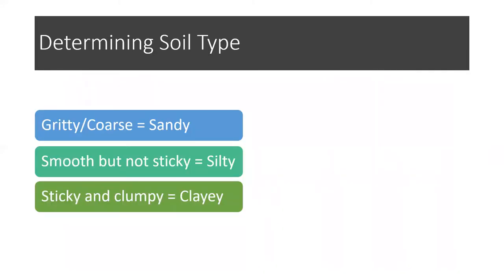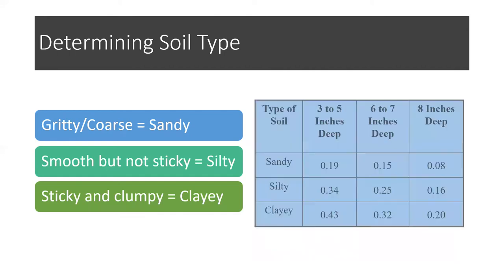Now we have to figure out the size of the rain garden needed to take care of all the water directed towards it. To figure out the size, we need two different numbers: a soil factor number and a drainage area number. I can email everyone some resources after the presentation. For determining your soil factor number, you obviously need to know what kind of soil you have, or at least a general idea.